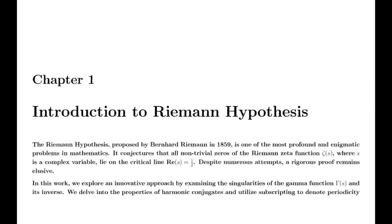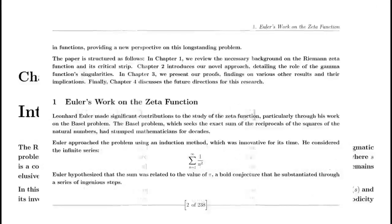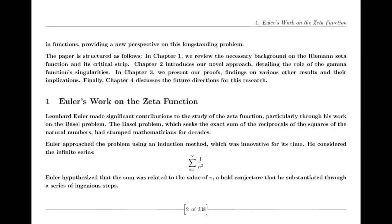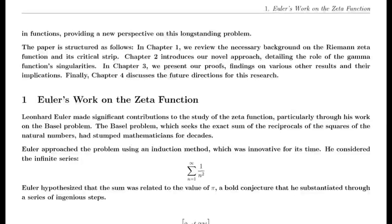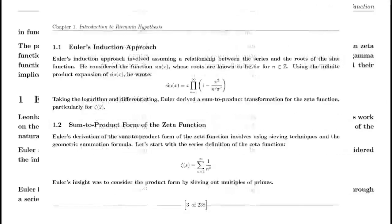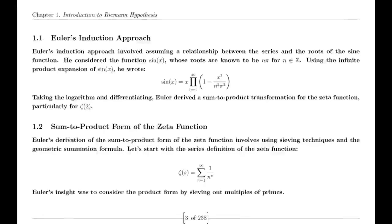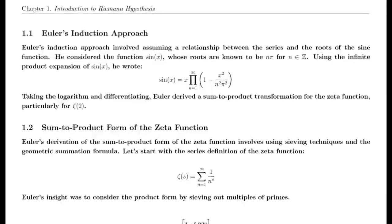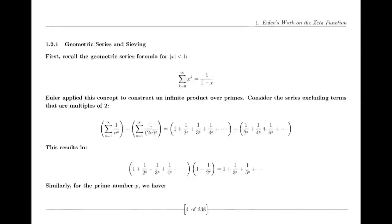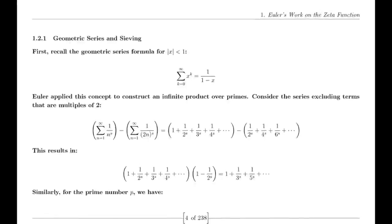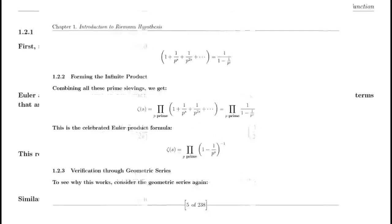One of Riemann's major discoveries was the reflection formula for the zeta function. This formula demonstrates a symmetry between the values of the zeta function at s and 1−s. Specifically, ζ(1−s) can be expressed in terms of ζ(s) using factors involving π, the gamma function, and trigonometric functions. This reflection formula is fundamental to the theory of the zeta function.